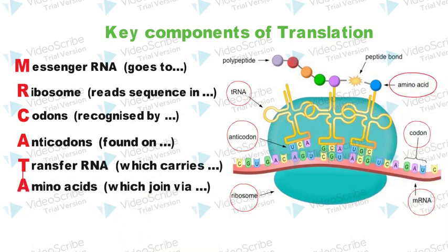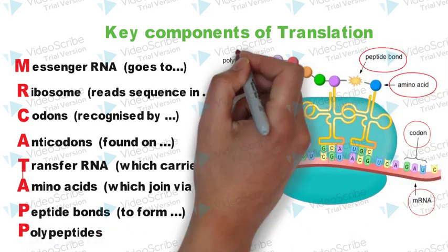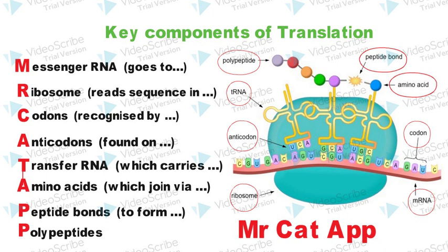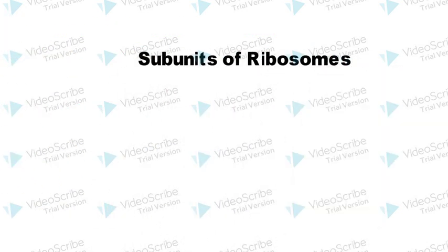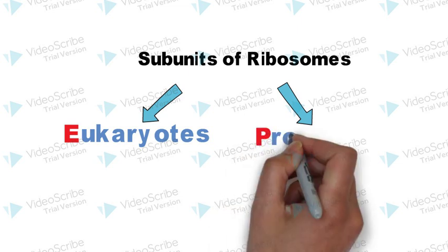We have a very simple mnemonic for this. The mnemonic is 'Mr. CAT APE' and as you can see, each letter in this mnemonic represents the key components or steps in the process of translation.